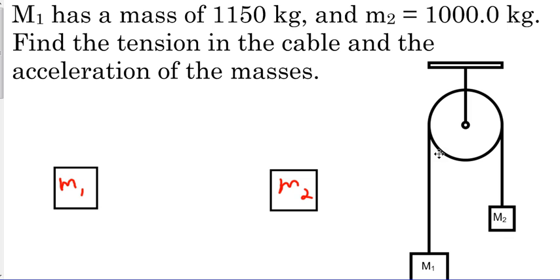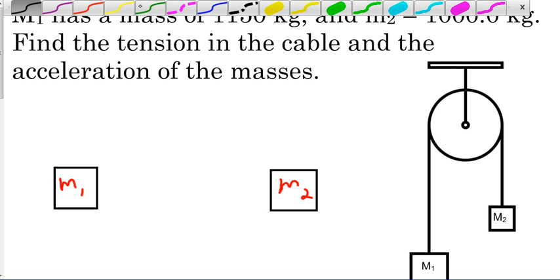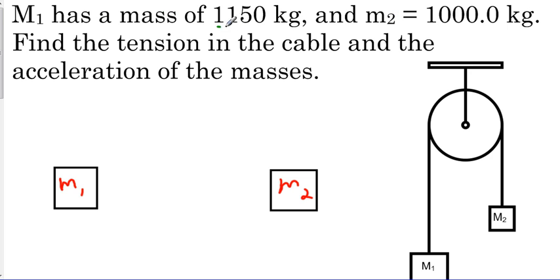For this one we have our M1, Mass 1, with 1150 kilograms. We also have our M2, which is 1000.0 kilograms. We want to find the tension in the cable and the acceleration of the masses.